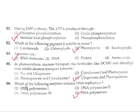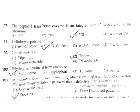Question 96: Which of the following enzymes initiates DNA replication? The enzyme is RNA polymerase, which is called primase. So the correct answer is option 4. Question 97: The peptide transferase enzyme is an integral part of which unit of ribosome? Peptide transferase is bound to the 50S unit. So the correct answer is option 3.